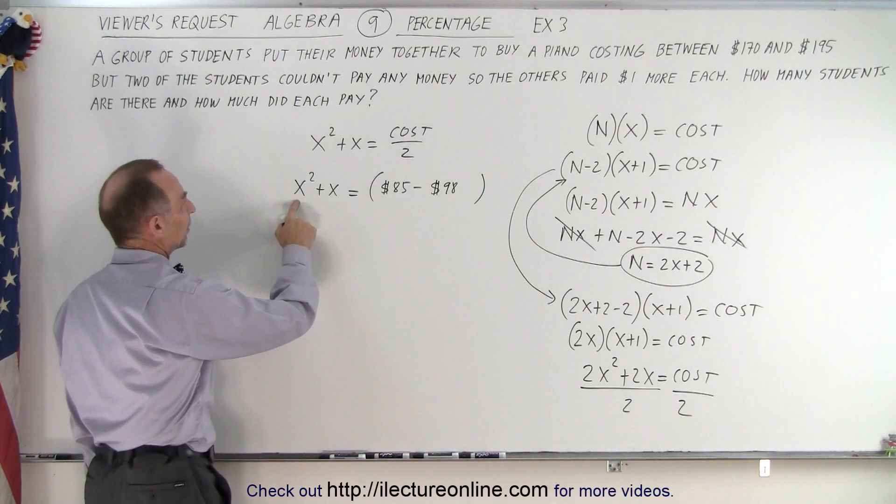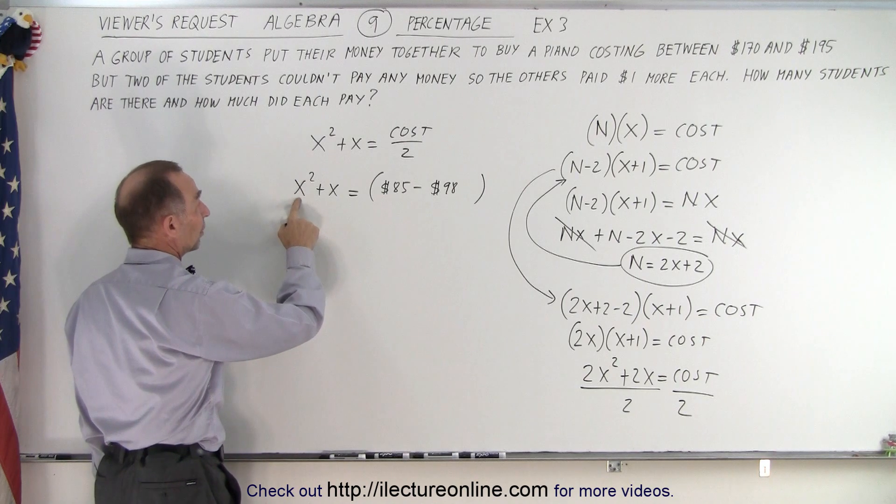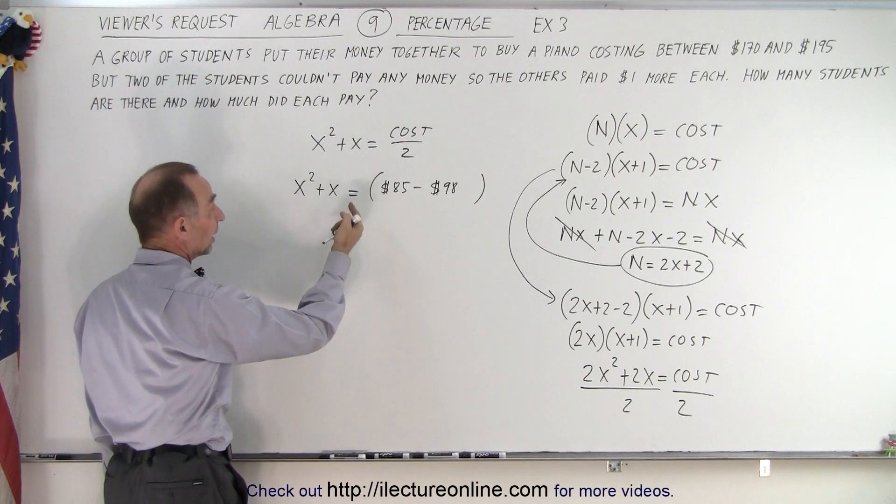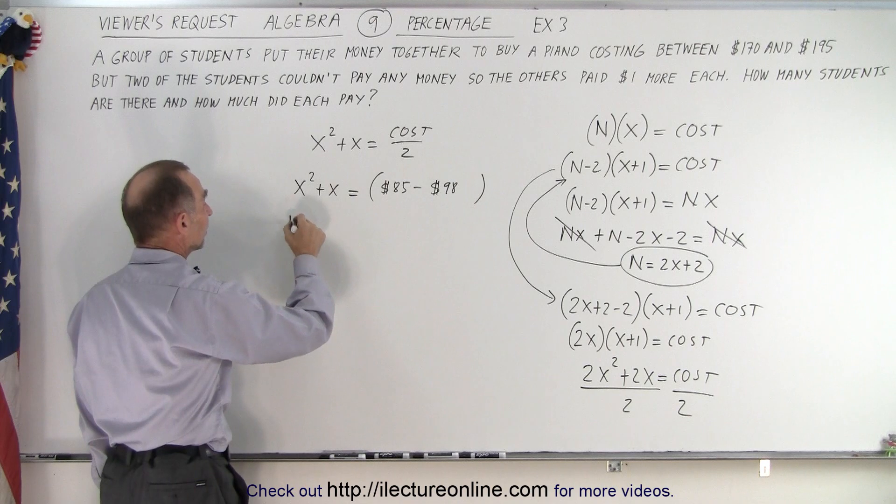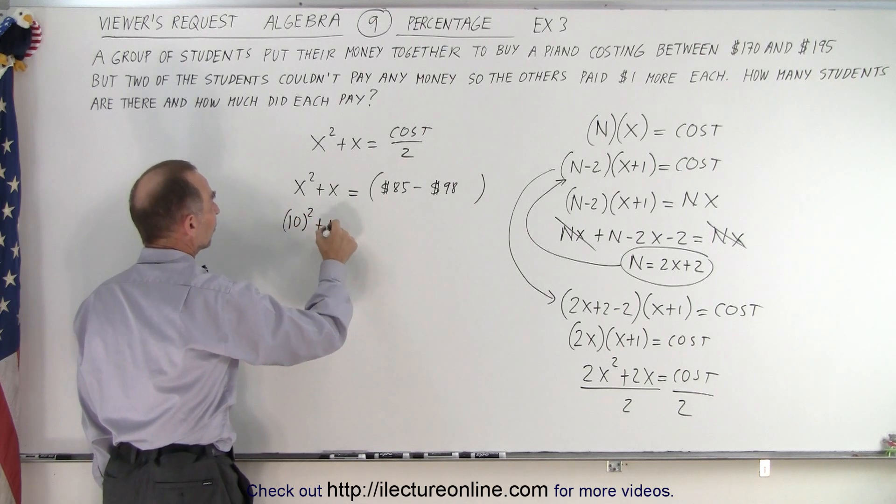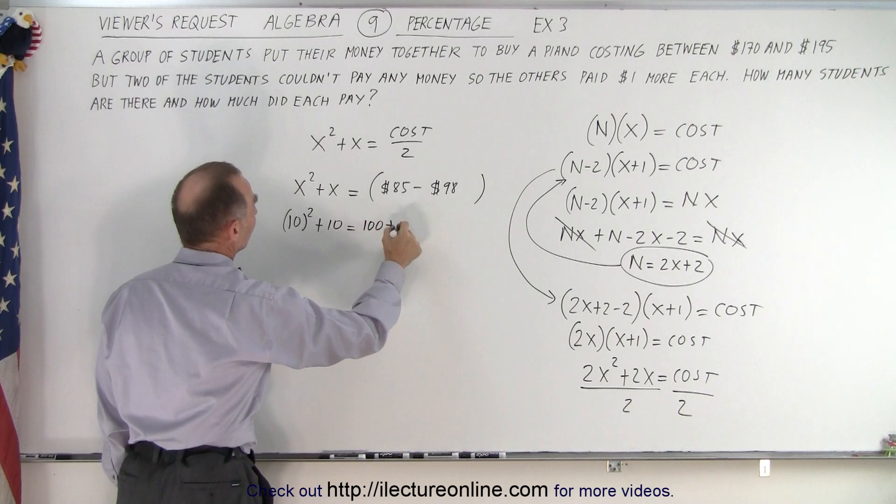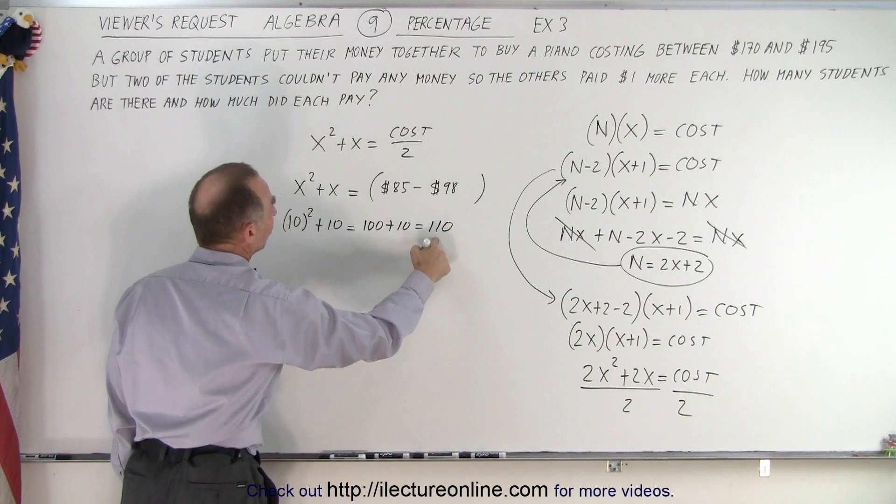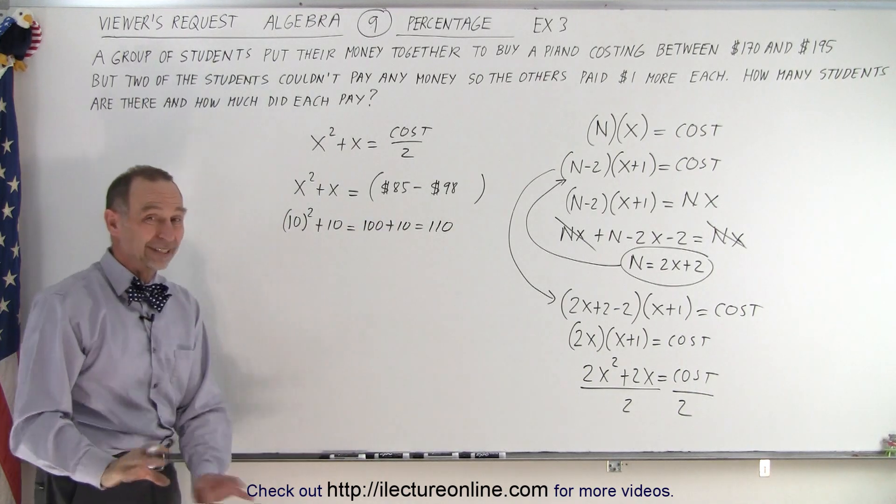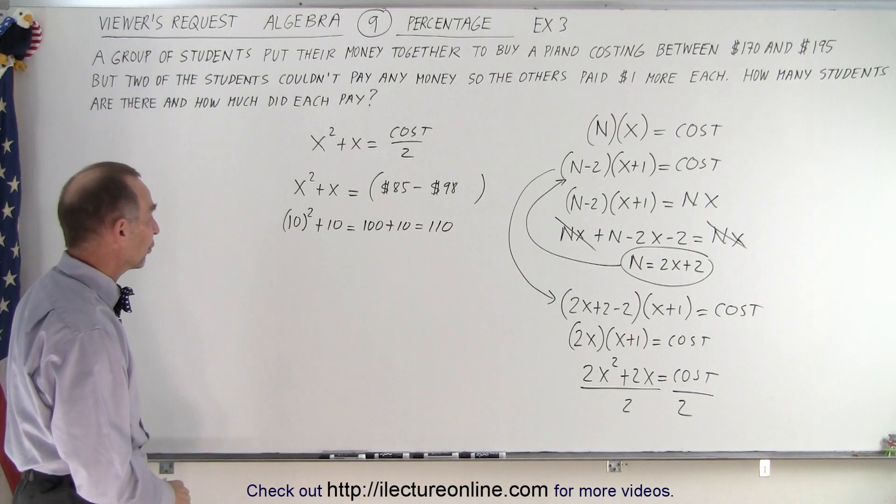And we have x², for example if x was 10, 10² would be 100 + 10 would be 110. So for example, 10² + 10 = 100 + 10 which is 110, which doesn't fall within that range. So 10 could not be the proper value for x.